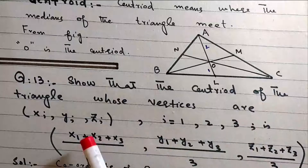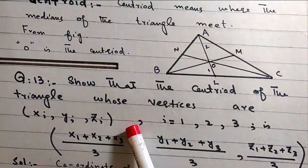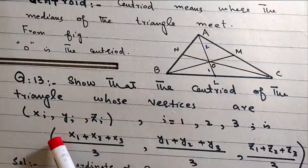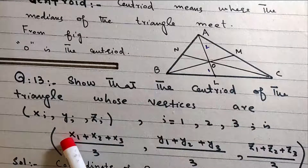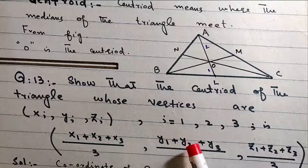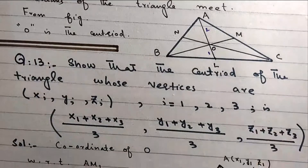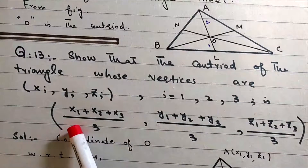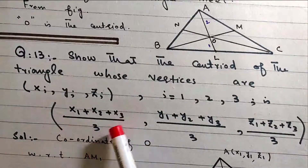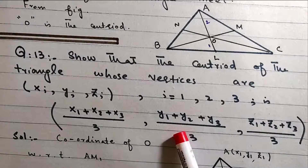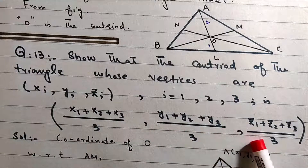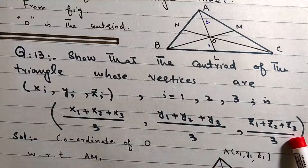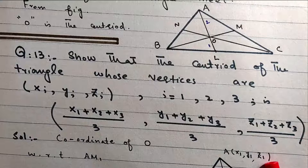The centroid of a triangle whose vertices are (xi, yi, zi) has coordinates: x1 plus x2 plus x3 divided by 3, y1 plus y2 plus y3 divided by 3, z1 plus z2 plus z3 divided by 3.